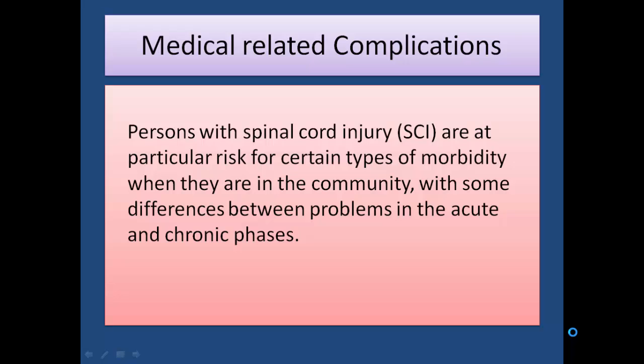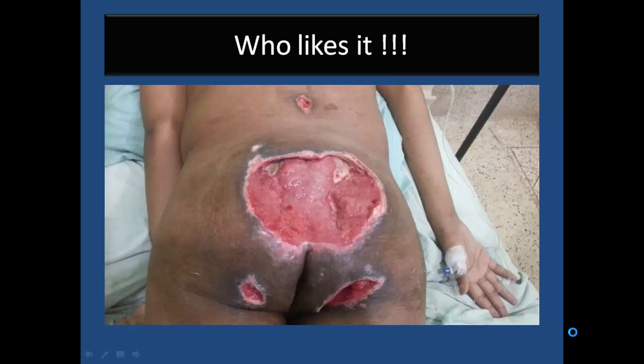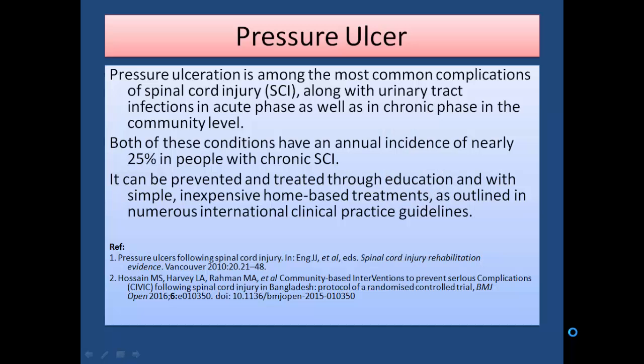There are some differences between problems in the acute and chronic phase. Every day at least two or three patients are admitted to my center with pressure ulcers, and 50% of readmitted cases in my center are with this type of pressure ulcer. Pressure ulceration is among the most common complications of spinal cord injury, along with urinary infections, in both the acute and chronic phase at the community level. Both conditions have an annual incidence of nearly 25% in people with chronic SCI.